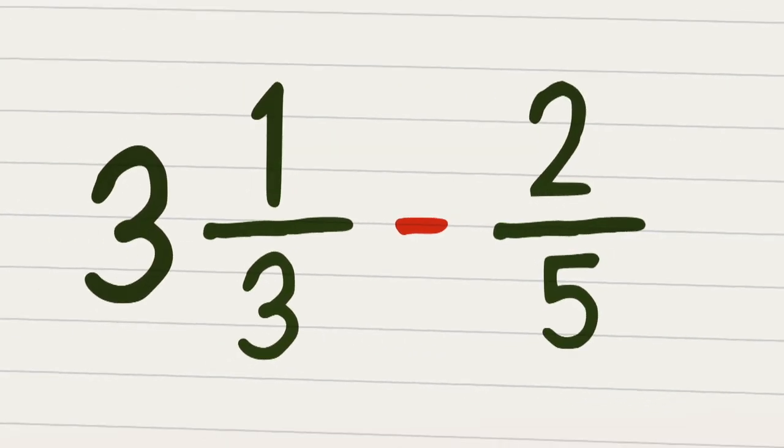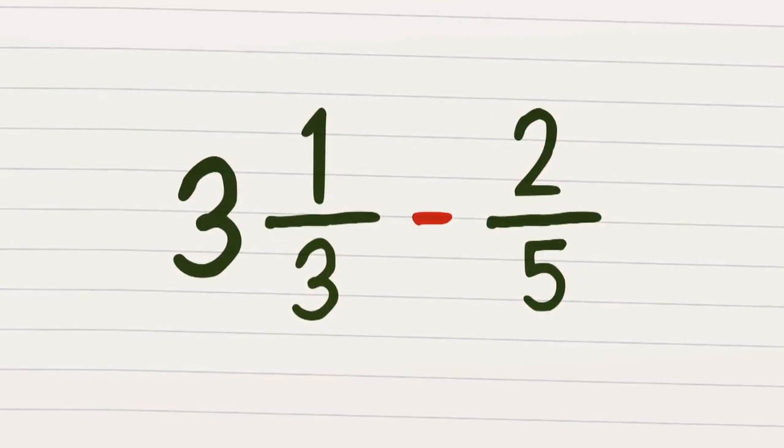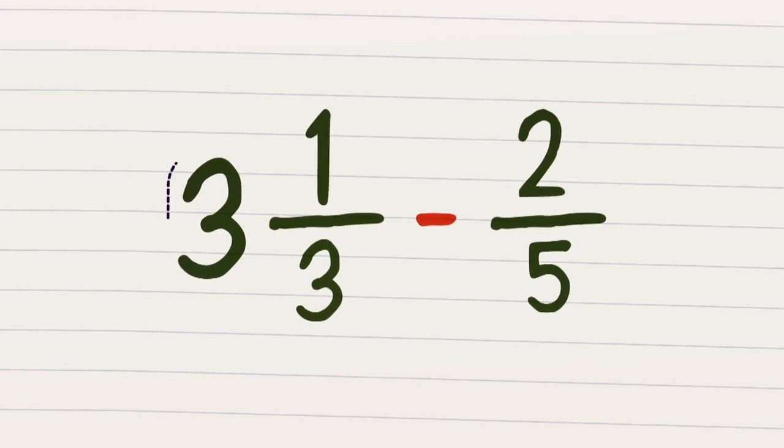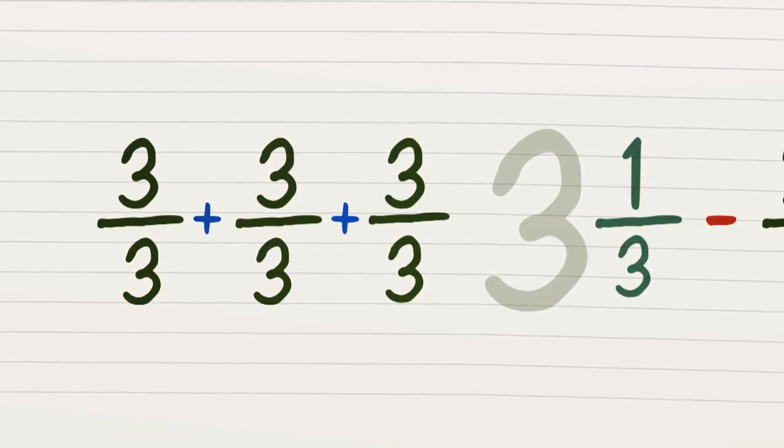Now what about using numbers that are mixed? And in amongst the thirds, we throw in a few fifths. Now with the numbers that's mixed, what we need to do first is take that whole three and break it down into thirds. With three in each whole and one more on the side, we can see that there are ten thirds hidden inside.